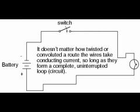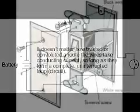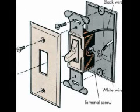What we see here is the basis for switching lamps on and off by remote switches — because any break in a circuit's continuity results in current stopping throughout the entire circuit. We can use a device designed to intentionally break that continuity, called a switch, mounted at any convenient location that we can run wires to, in order to control the flow of electrons in the circuit.